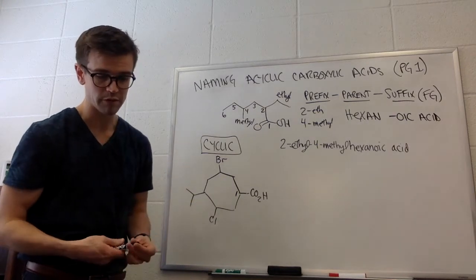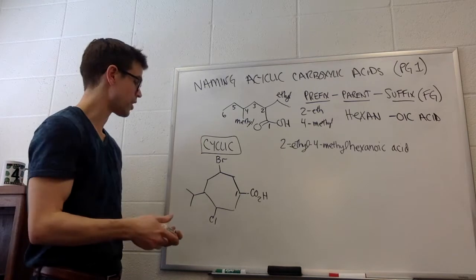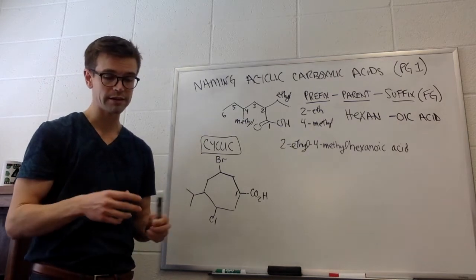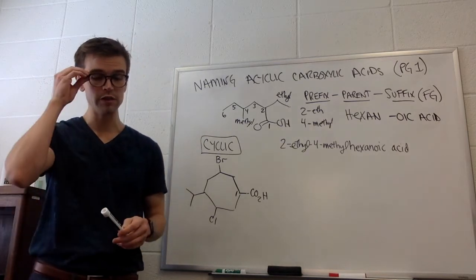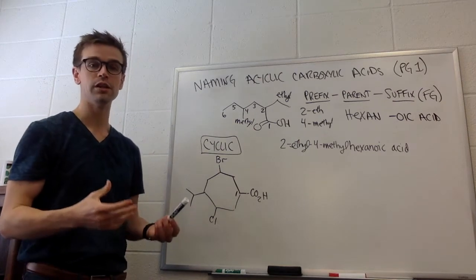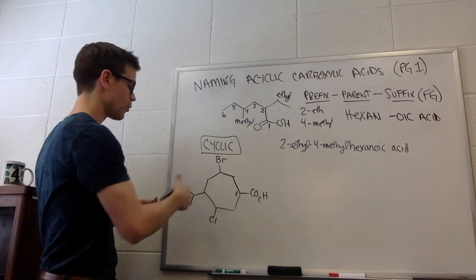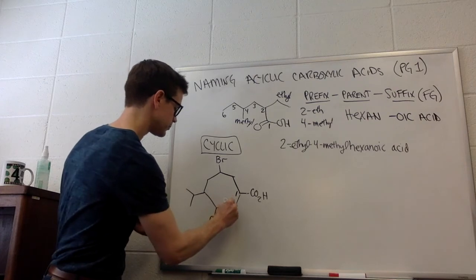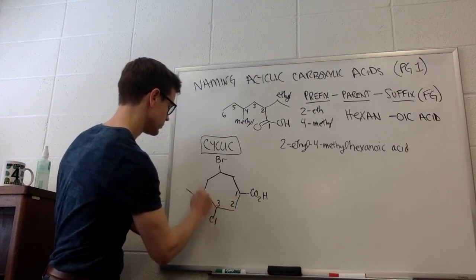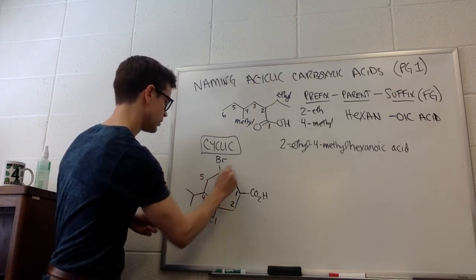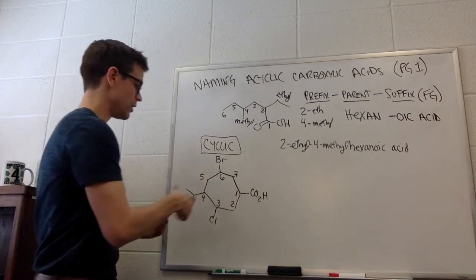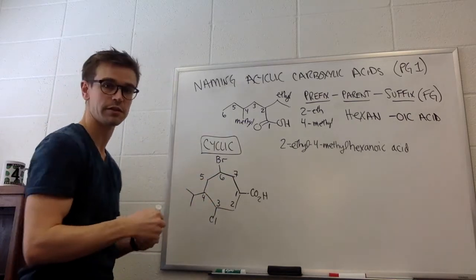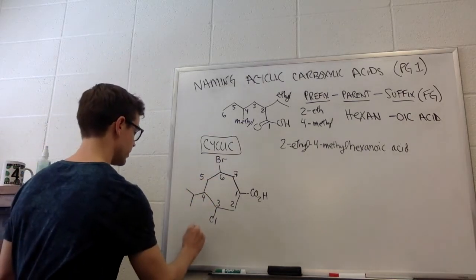And then two, we follow common rules of nomenclature after that. So the common rules for rings is that we number to give the lowest possible combination of numbers. So if we number clockwise around this ring, we have the substituents at positions three, four, and six.